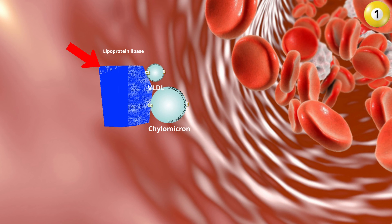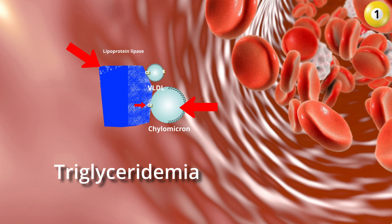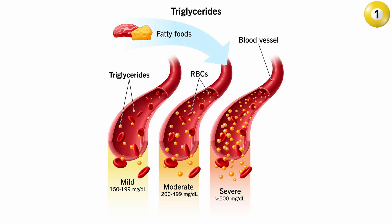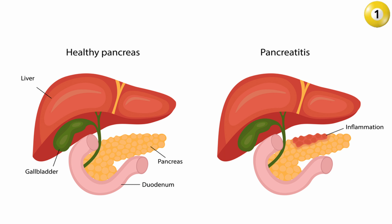Mutation of lipoprotein lipase or its cofactor ApoC2 results in severe triglyceridemia, as chylomicrons persist in the circulation while VLDL production can be regulated by the liver. An increase in triglyceride accumulation in the blood can cause impaired blood flow to organs such as the pancreas, leading to symptoms of pancreatitis.